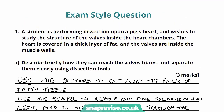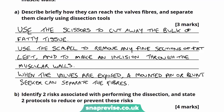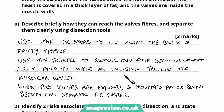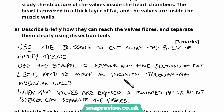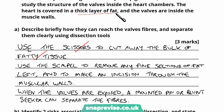Let's look at what I've written here. The first point is to use the scissors — one of the pieces of equipment you should really mention — to cut away the bulk of the fatty tissue. Because it says at the start that the heart is covered in a thick layer of fat. So always start from the beginning. We can't delve straight into the valves; we need to get rid of all the fatty tissue first.